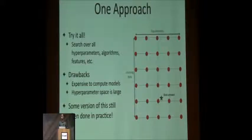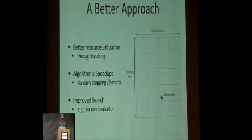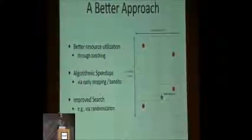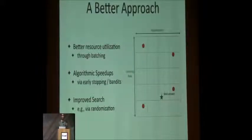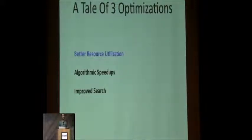In MLopt, our strategy for improving upon naive grid search in a distributed setting is based on three things. First, better resource allocation — in a distributed setting, it makes a lot of sense to train multiple models at the same time rather than sequentially one at a time. Second, you can frame model search as a multi-armed bandit problem, or more simply, stop early on models that aren't looking very good. The shaded-out circles in this picture are models we started to train but gave up on early. Third, improved search — grid search is one way to go, but there are other approaches, and recent work shows grid search isn't necessarily the best.